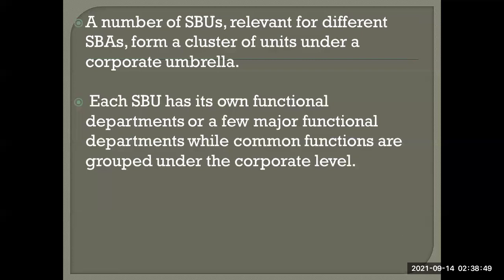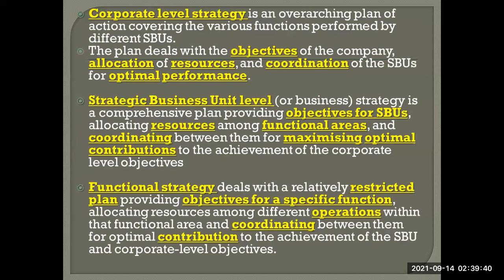A number of SBUs relevant for different areas form a cluster of units under a corporate umbrella. For example, Tata Motors has many different SBUs — such as passenger cars — and these SBUs come together under one corporate umbrella. Each SBU has its own functional departments, while common functions are grouped under the corporate level.